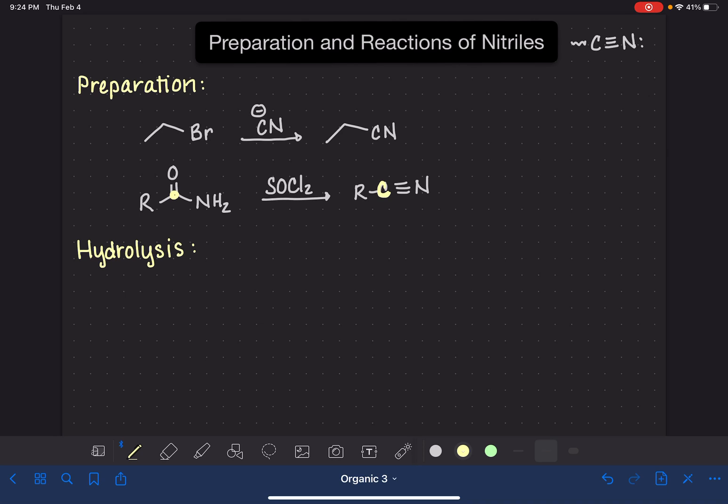So we can do hydrolysis reactions with nitriles, either acid-catalyzed hydrolysis or base-catalyzed hydrolysis. In the acid-catalyzed hydrolysis reaction, we're using H3O+, some type of strong acid, along with heat. Nitriles are not super reactive, so we need to help the reaction take place by giving it some heat. And this converts the nitrile to a carboxylic acid.